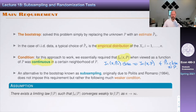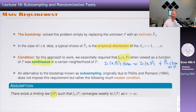Subsampling requires only the following much weaker condition: there exists a limiting law J(P) such that J_n(P) converges weakly to J(P) as n goes to infinity. This is the only assumption subsampling requires. It says your root has a sampling distribution, you want that distribution to have a well-defined limit, and that's it. There is no requirement on continuity.